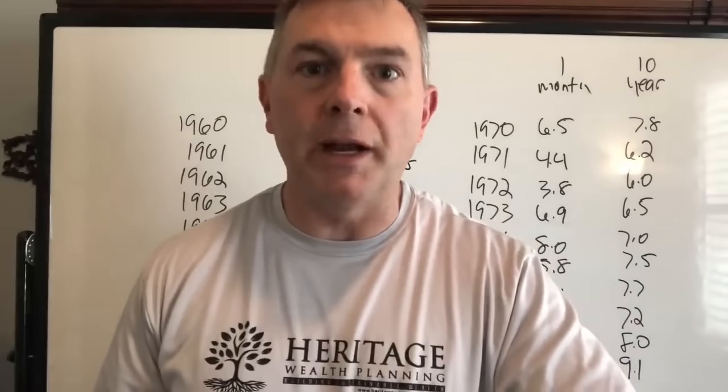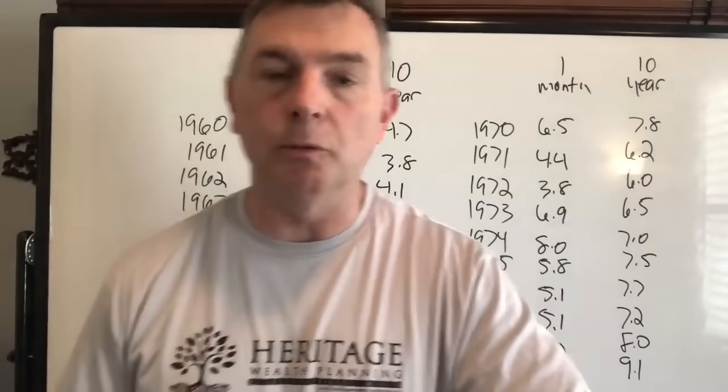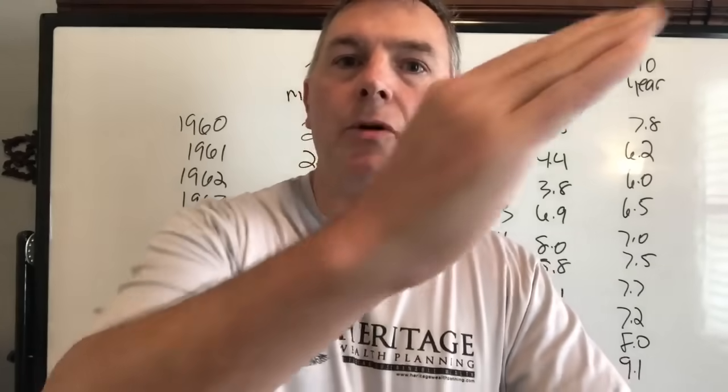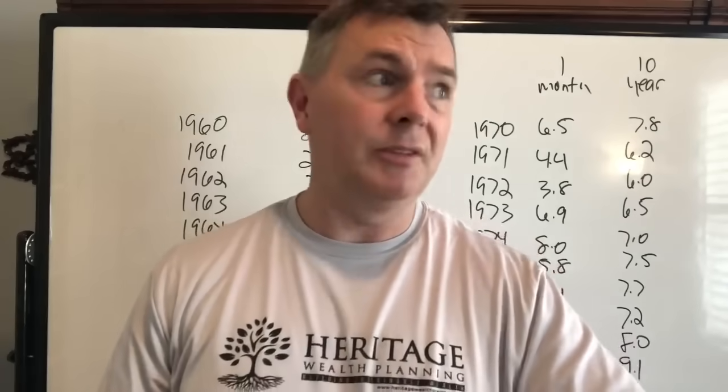Bill Bengen started the ball rolling — actually he cited somebody else in his Journal of Financial Planning article from 1994. The point being, everyone was saying we have a linear rate of return of 10% a year, markets go up 10% each and every year, thus we should be able to take 6% a year without even touching principal and actually adding 4% a year to capital.